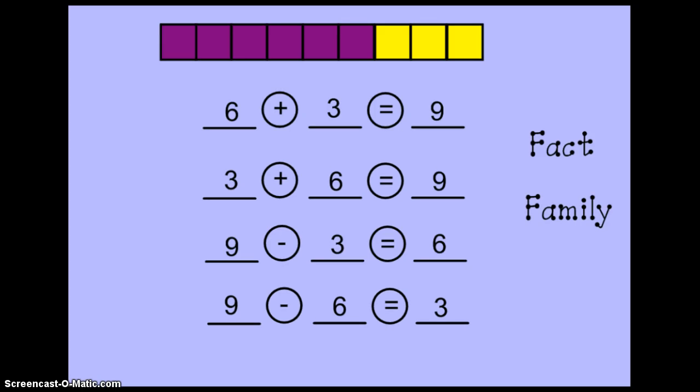Now let's take a look at the four facts that we wrote about that set of cubes. You see that there's two addition facts and two subtraction facts that we can write using that set of cubes. These three numbers are used in each fact. This makes up what we call a fact family. A fact family is a family of facts where there are two addition sentences and two subtraction sentences all using the very same numbers. We can use this as a strategy to help us solve addition and subtraction sentences that use those numbers.